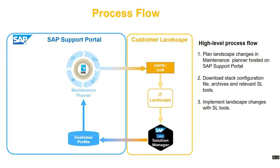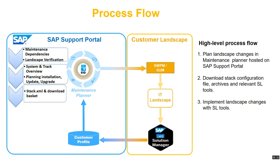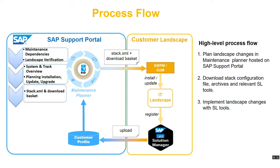Now let's look at the process flow of how Maintenance Planner works. We use Maintenance Planner to maintain dependencies, verify the landscape, create system tracks, and generate a stack XML file for upgrade. That XML file is then used either with Software Provisioning Manager to install a new system, or with Software Update Manager to upgrade an existing SAP system. Once the system is installed or upgraded, it is registered in the SLD, then in the LMDB which is part of Solution Manager, and then to the customer profile located in Service Marketplace, from where Maintenance Planner fetches the required data. Other tools such as Innovation Discovery and the SAP Engagement and Service Delivery work center in Solution Manager also use information from the customer profile, so it's very important to ensure that the latest data is uploaded from Solution Manager to the customer profile.